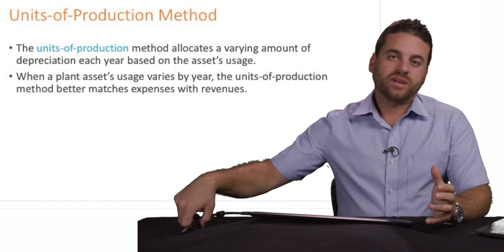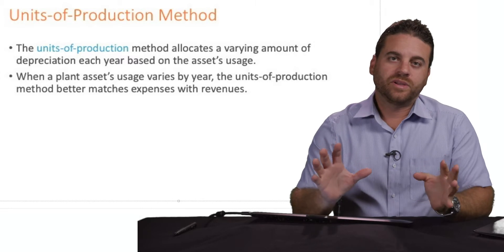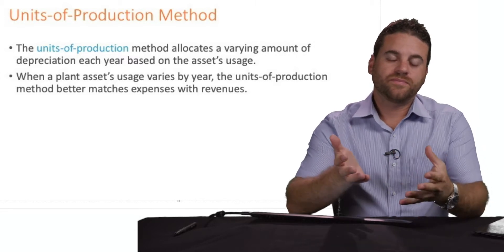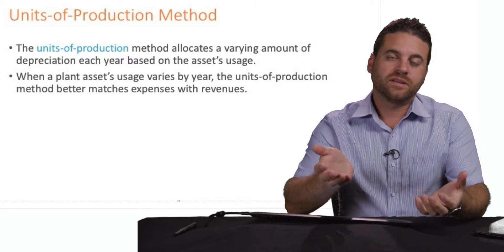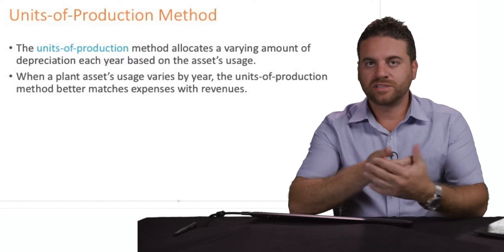The units of production means we're going to calculate depreciation based on the usage of that asset. The more we use it, the more depreciation. The less we use it, the less depreciation.